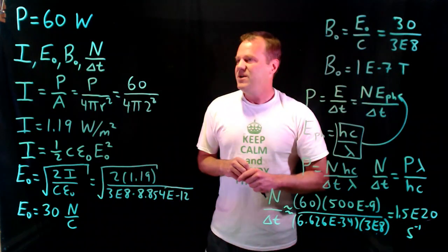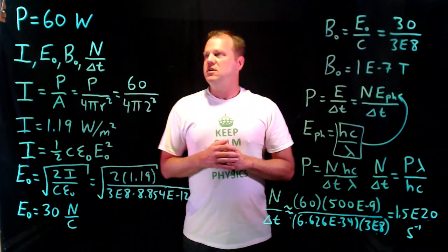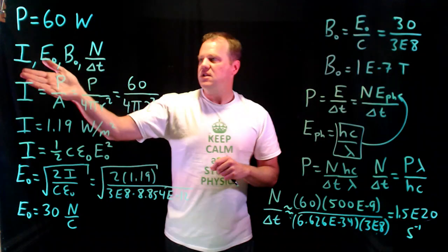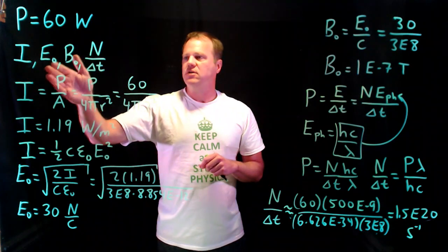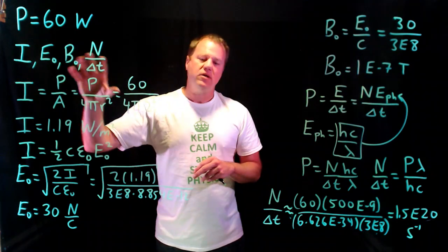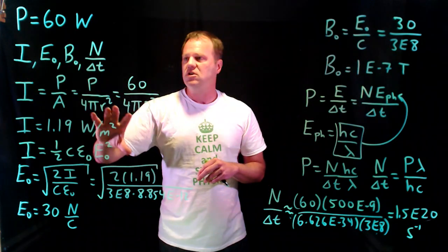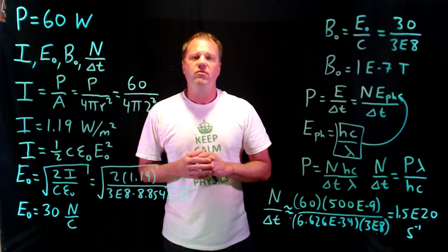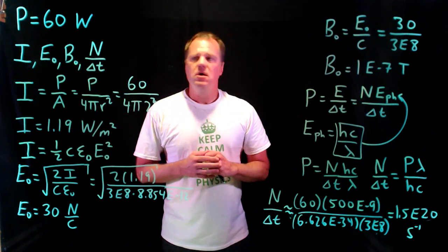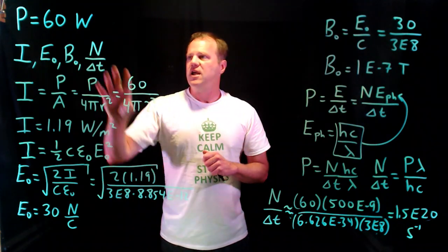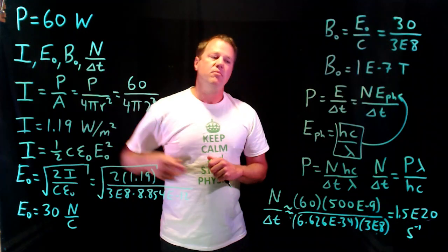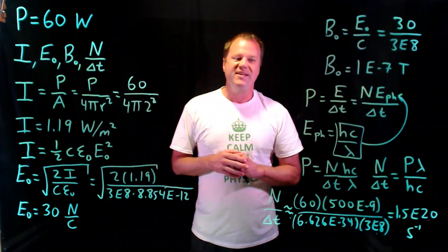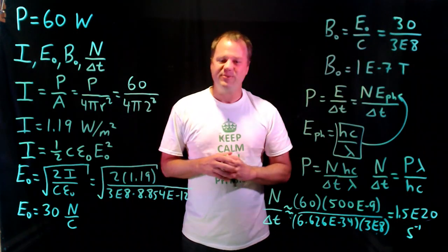So that's it. I took a 60-watt light bulb, calculated the intensity, electric field, and magnetic field at a distance of 2 meters away, and calculated the number of photons per second being emitted by that 60-watt bulb. Thanks for watching.